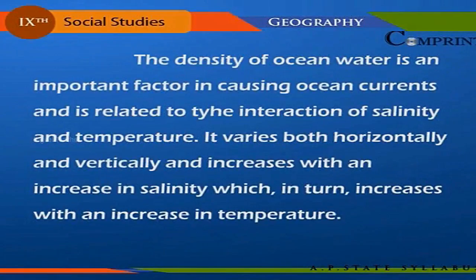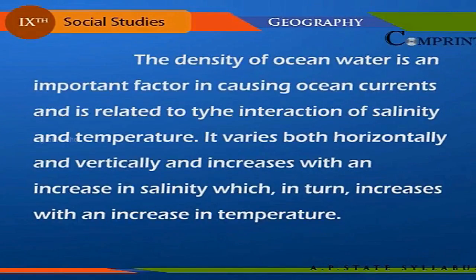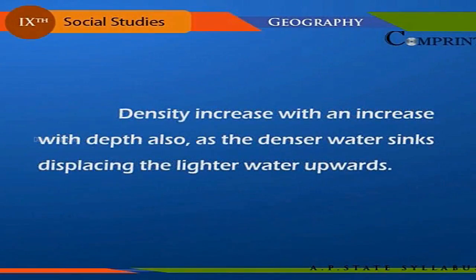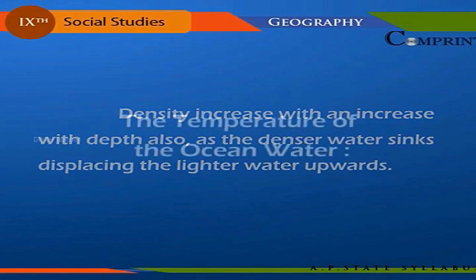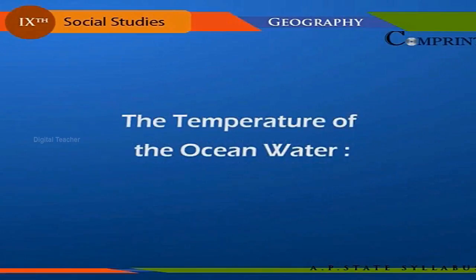The density of ocean water is an important factor in causing ocean currents and is related to the interaction of salinity and temperature. It varies both horizontally and vertically, and increases with an increase in salinity, which in turn increases with an increase in temperature. Density also increases with depth, as denser water sinks, displacing lighter water upwards.